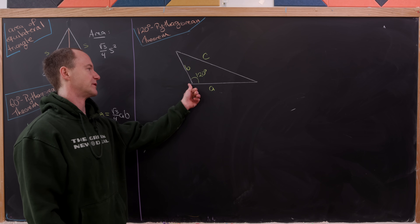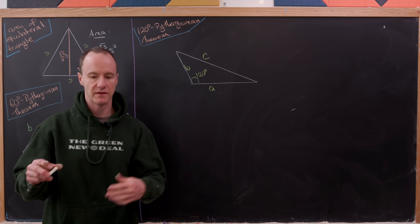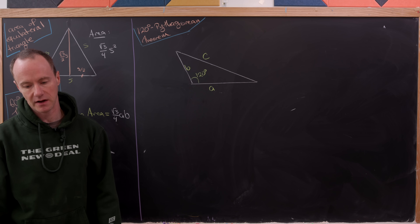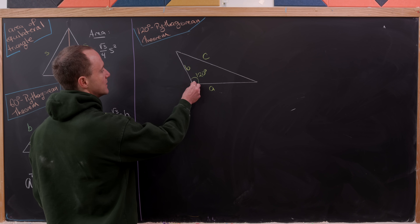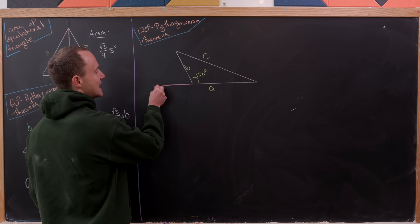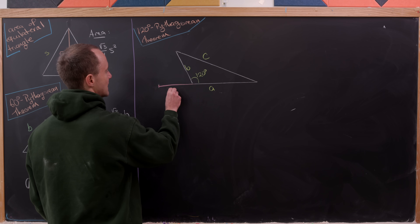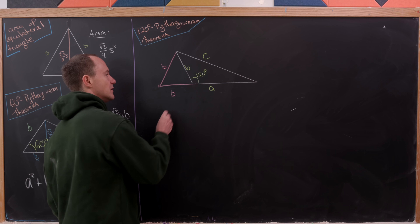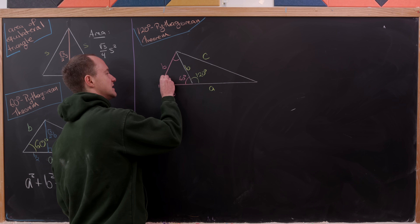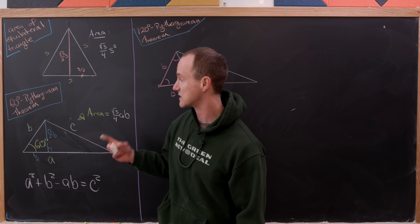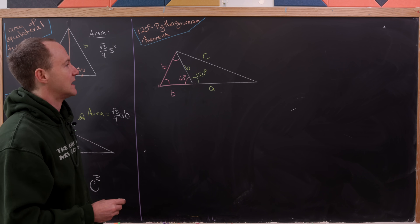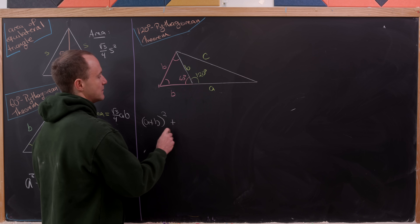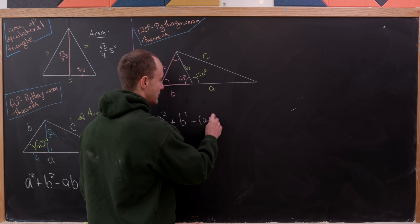Now for the 120 degree Pythagorean Theorem. We have a triangle with a 120 degree angle, with side lengths A and B and hypotenuse C opposite the 120 degree angle. The trick is to extend the base to the left by B units and complete that into an equilateral triangle. This makes the new angles 60 degrees each, so we can apply the 60 degree Pythagorean Theorem to the larger triangle. That gives us (A plus B) squared plus B squared minus (A plus B) times B equals C squared.